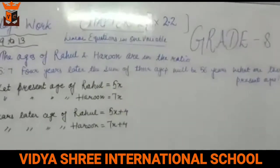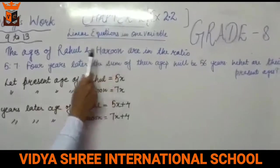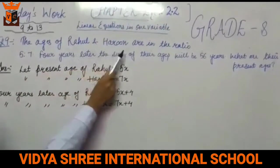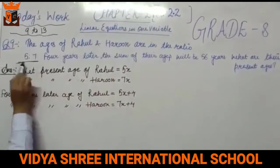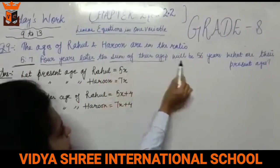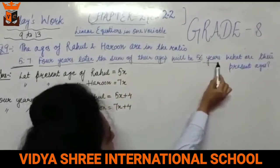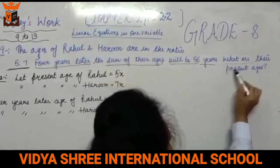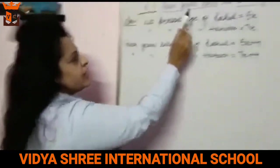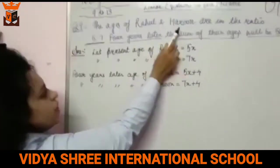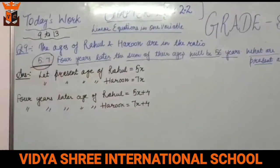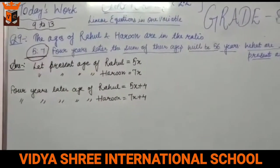This is chapter 2, exercise 2.2, question number 9. The ages of Rahul and Harun are in the ratio 5:7. Four years later, the sum of their ages will be 56 years. What are their present ages? The two ages are in the ratio 5:7.